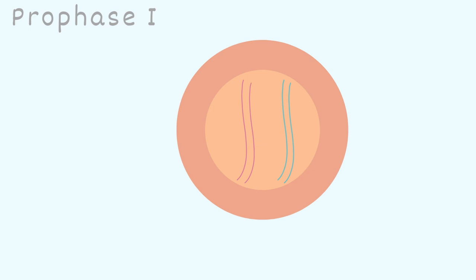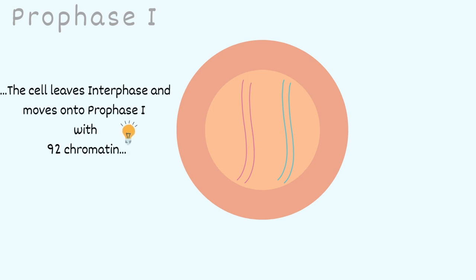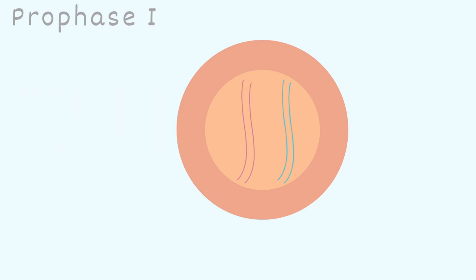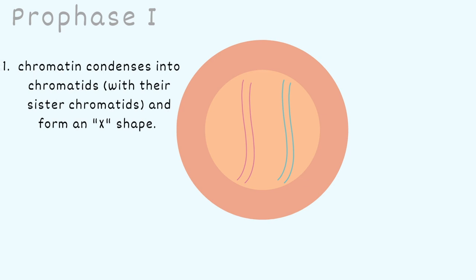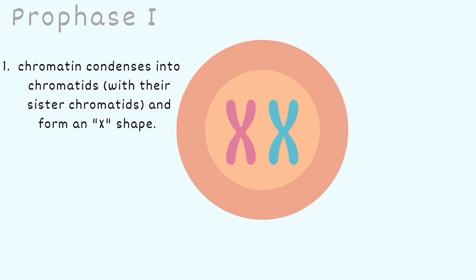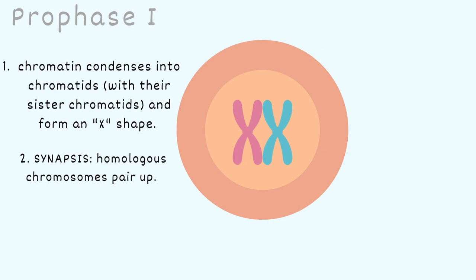The cell is now ready to enter meiosis 1, specifically prophase 1. Remember, the cell leaves interphase and moves into prophase with 92 chromatins. A few major things happen here in prophase 1. First off, the chromatin condenses into chromatids with their sister chromatids and they form this X shape. Next, synapsis occurs — this is when the homologous chromosomes pair up. Homologous refers to one maternal and one paternal chromosome pair, and they are going to pair up by overlapping each other.